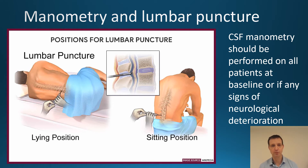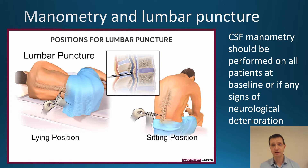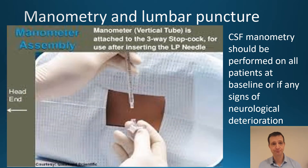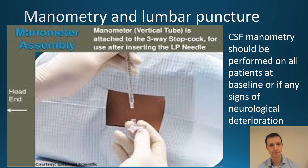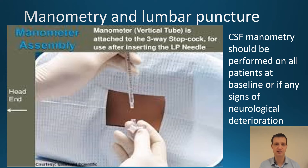If a patient has central nervous system signs and the CT is normal with no mass effect, then a lumbar puncture should probably always be performed if it is safe to do so. There are two positions for a lumbar puncture: sitting or lying. A lying position is best if you want to measure the pressure, and this is done using a manometer — a long tube that fits into the tap previously inserted into the lower spine.